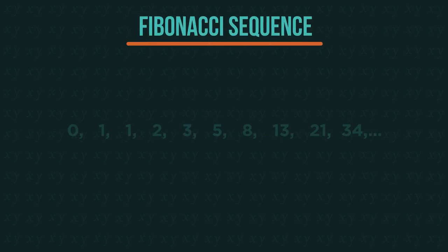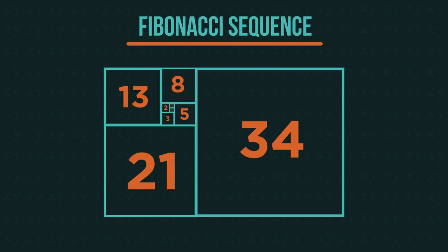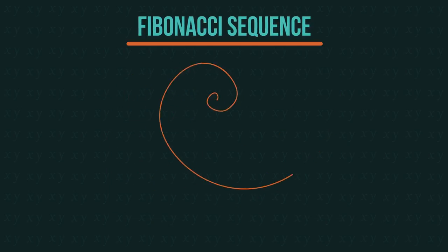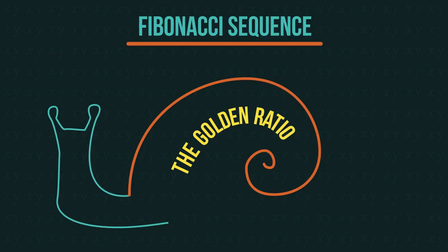This is called the Fibonacci sequence. You just add up the two numbers before to get the next term. There's a lot you can discover about Fibonacci such as if you make squares of Fibonacci sizes you get a spiral. It's also linked to the golden ratio and is seen throughout nature.